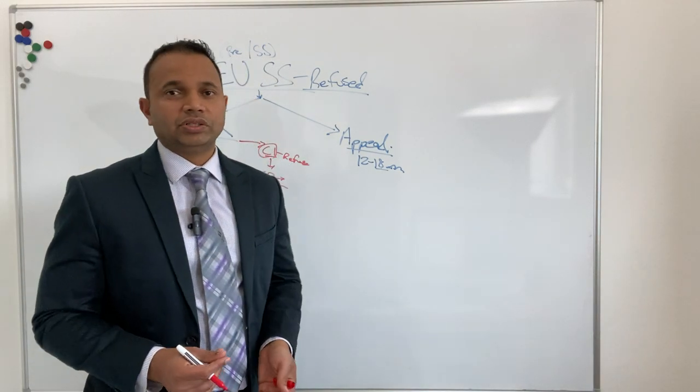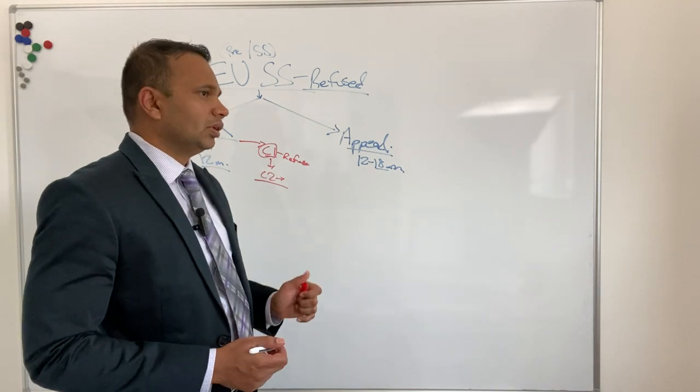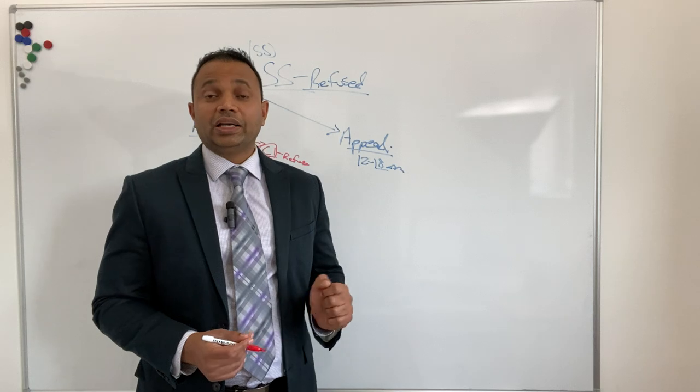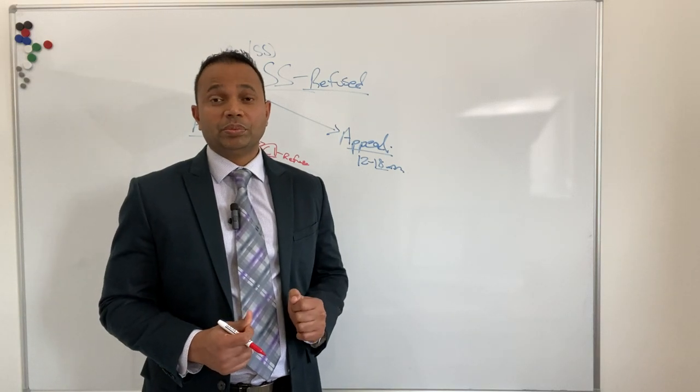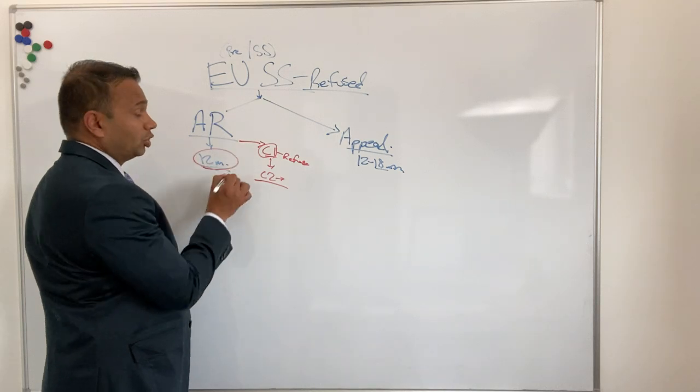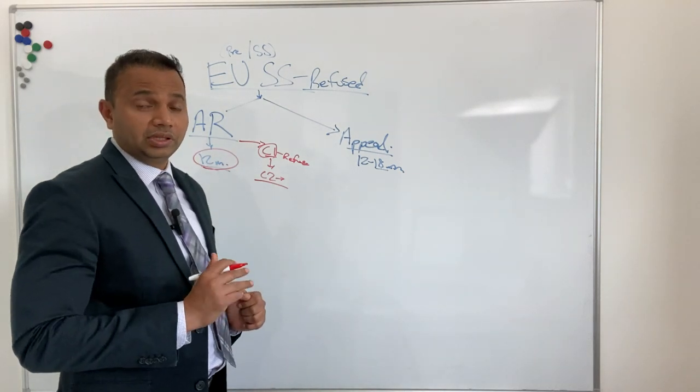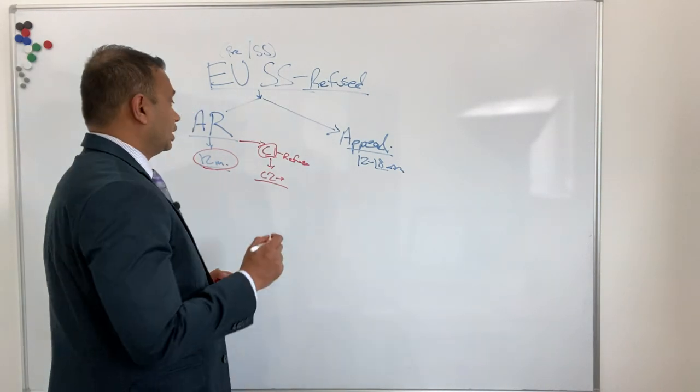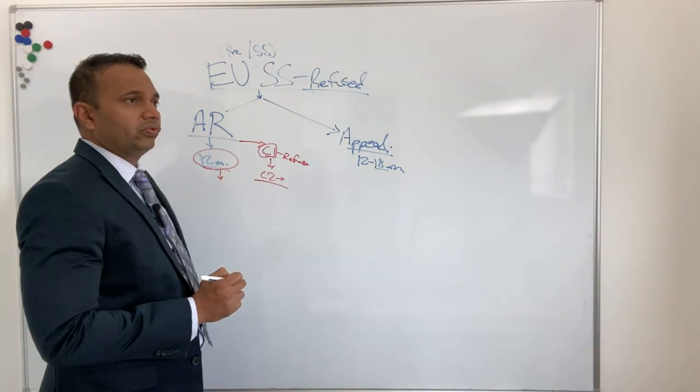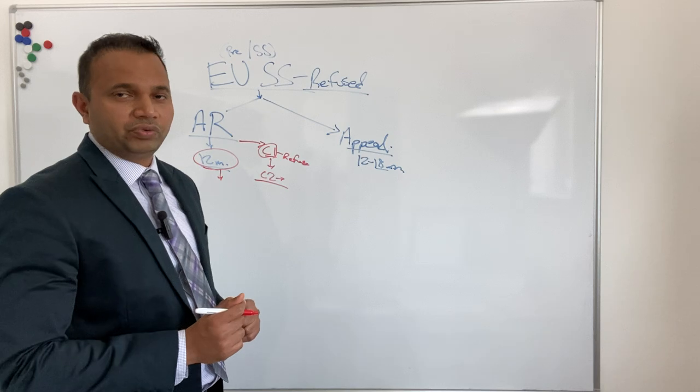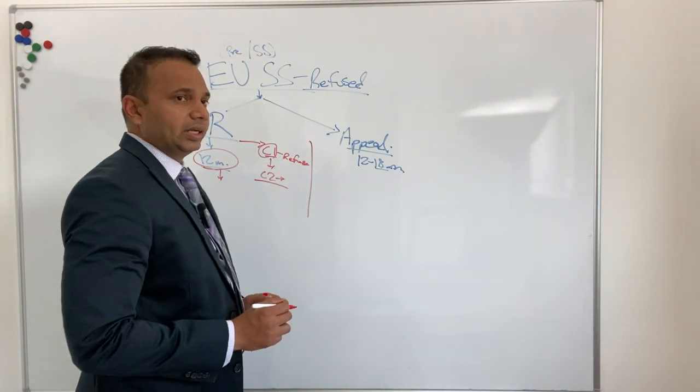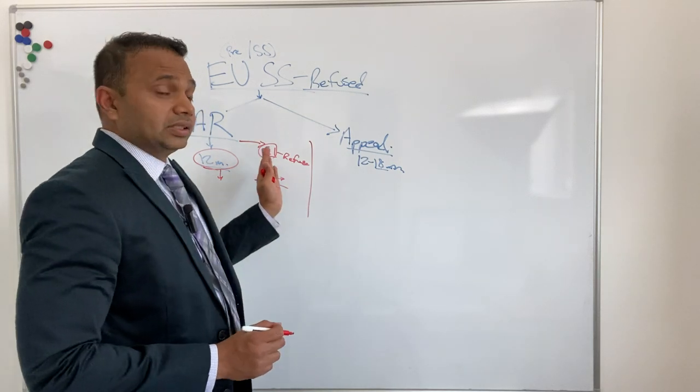Usually the AR approval rates after administrative review are quite low. These are two main problems of AR: it takes about 12 months processing time, the queue is very long now for EUSS reviews, and the rate of approval after doing an administrative review is also quite low.